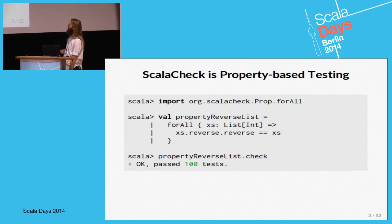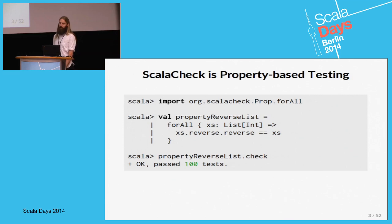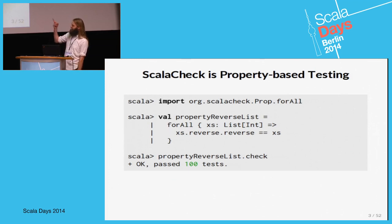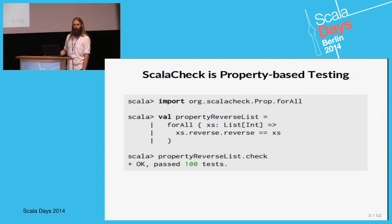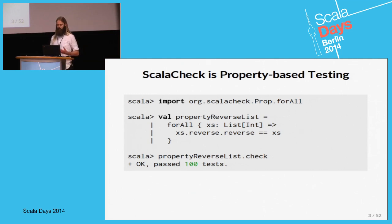In this case we want to test a reverse method of a list and we just say that for any list, if you call reverse twice you should get the same list back. This property doesn't specify the reverse method completely, but it captures one property that you want to hold for your implementation.